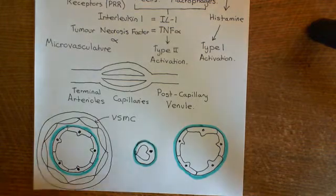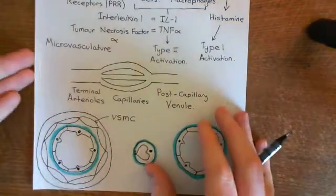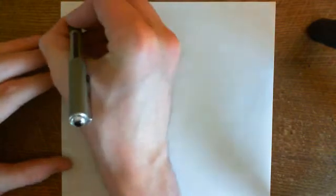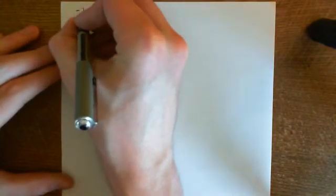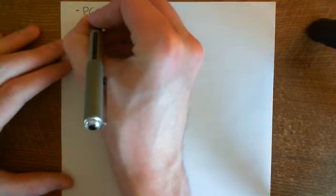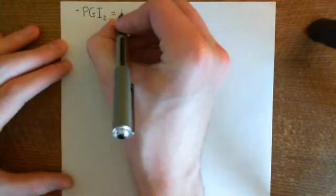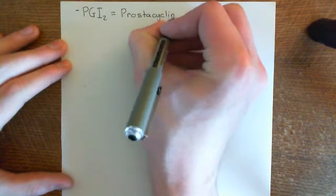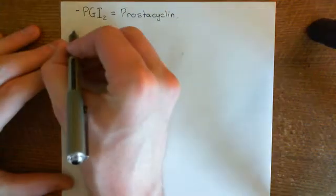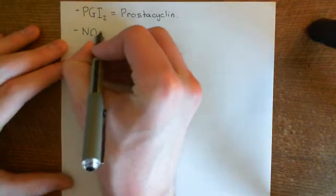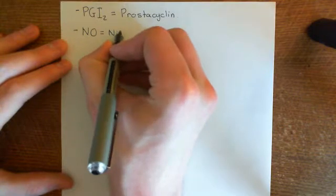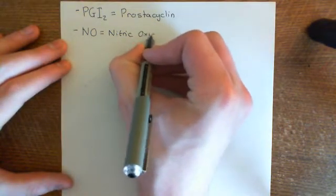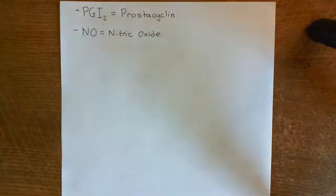Type 1 activation is going to result in the endothelial cells starting to produce two vasodilatory molecules. The first is prostaglandin I2, also known as prostacyclin. This is a powerful vasorelaxant molecule — it causes relaxation of vascular smooth muscle cells. In addition, they're going to start producing nitric oxide (NO), more properly called nitric monoxide, but everyone calls it nitric oxide. So the type 1 activated endothelial cells are going to produce prostacyclin and nitric oxide.